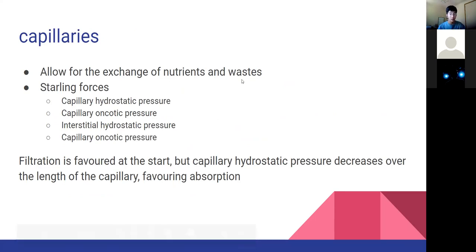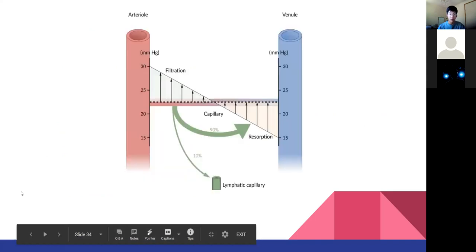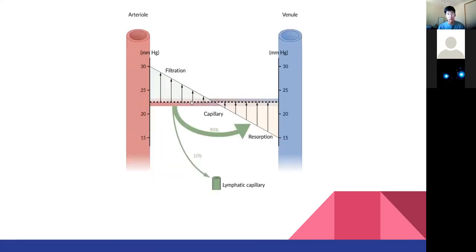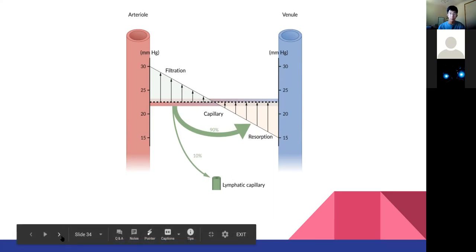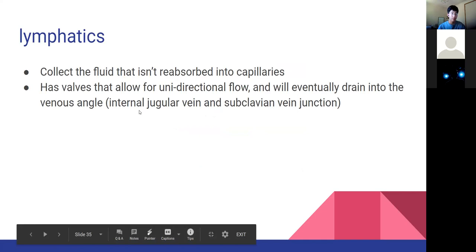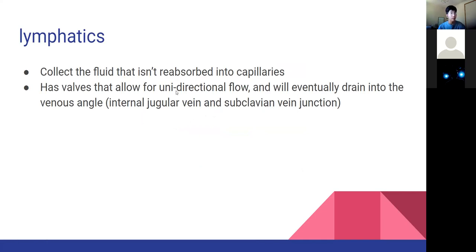Capillaries allow for the exchange of nutrients and wastes, and we have four main pressures. As you go along the length of the capillary, the capillary hydrostatic pressure decreases, causing a shift from filtration - going from the capillary out into the interstitium - which will eventually reverse and cause interstitial fluid to go back into the capillary. The excess fluid that isn't reabsorbed goes through our lymphatics. These lymphatics have valves and drain back into your heart at the venous angle, at the junction of the IJV and subclavian on both sides.